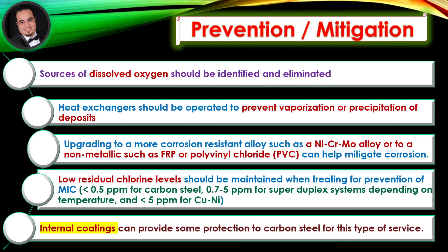Prevention and mitigation. Sources of dissolved oxygen should be identified and eliminated. Heat exchangers should be operated to prevent vaporization or precipitation of deposits. Upgrading to a more corrosion-resistant alloy such as a nickel-chromium-molybdenum alloy, or to a non-metallic such as fiber-reinforced plastic or polyvinyl chloride, can help mitigate corrosion. Low residual chlorine levels should be maintained when treating for prevention of microbiologically influenced corrosion. Internal coatings can provide some protection to carbon steel for this type of service.